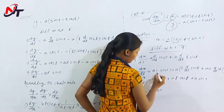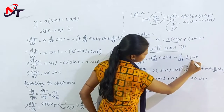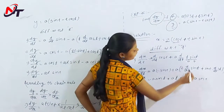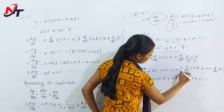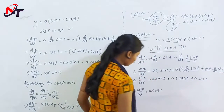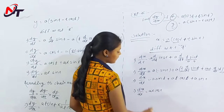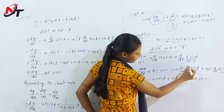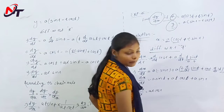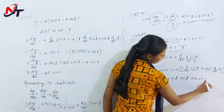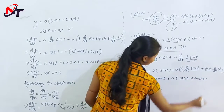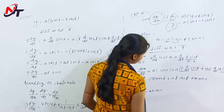Derivative of cos t is minus sin t. For the term t sin t, apply the product rule (u·v formula): u is t, v is sin t. So derivative is u·(dv/dt) + v·(du/dt) = t·cos t + sin t·1. Therefore dx/dt equals minus a sin t plus t cos t plus sin t. The sin t terms cancel, so dx/dt is equal to at cos t.